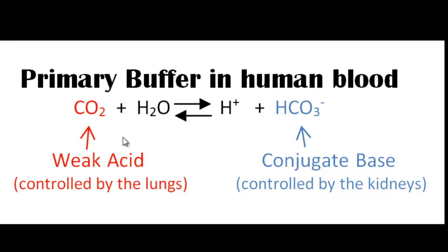If there's an increase in CO2, that will cause an increase in hydrogen ion concentration, creating an acidic environment. If there's a decrease in CO2, that will reduce the amount of hydrogen ion, therefore creating an alkaline or basic environment.